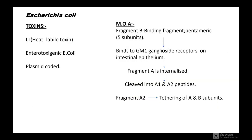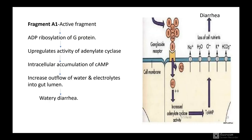Next is E. coli toxins. The heat labile toxin is secreted by enterotoxigenic E. coli and is plasmid coded. The mechanism of action: Fragment B is the binding fragment, pentameric with 5 subunits, which binds to the GM1 ganglioside receptor on intestinal epithelium. Fragment A gets internalized and cleaved into A1 and A2 peptides. Fragment A2 helps in tethering of A1 and B subunits.